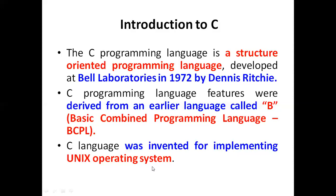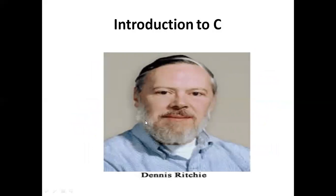They innovated C language to implement the Unix operating system as system-based software. Without operating systems, a computer cannot work, which is why such software is called system-based software. C language was originally developed for implementing the Unix operating system, but currently it can be used to develop both system-based and application-based software.